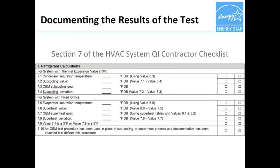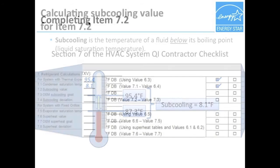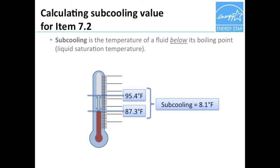Now Rob can move on to section 7. For systems with a TXV, items 7.1 through 7.4 must be completed. For item 7.1, Rob records the refrigerant saturation temperature in the liquid line after the condenser — automatically calculated by the digital manifold and reported on the second screen. Alternatively, the contractor could have determined this value manually using a pressure-temperature chart and the measured pressure value from item 6.3. For item 7.2, Rob records the subcooling value, also automatically calculated by the digital manifold and reported on the third screen. Alternatively, this could be calculated by subtracting the measured liquid line temperature in item 6.4 from the liquid line saturation temperature in item 7.1.